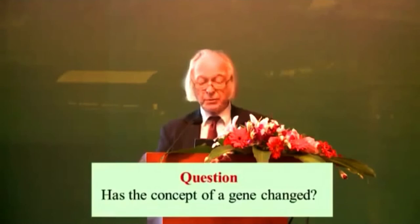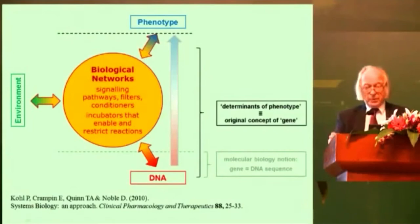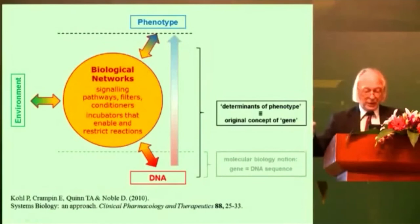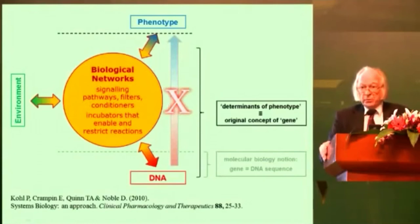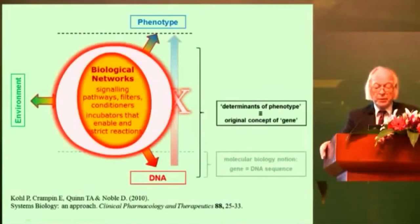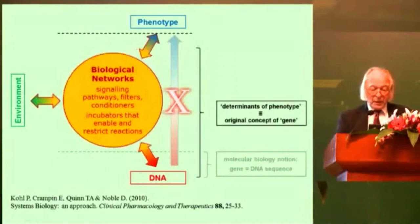I think the reason is that the concept of a gene has changed — fundamentally — during the century since Johansson introduced it in 1909. This diagram shows the nature of the problem. There is the direct arrow from DNA to phenotype, which was the original idea: for each phenotype there was a gene. That is obviously wrong. We know, as physiologists, that large numbers of proteins and other components in cells cooperate in networks — the biological networks, the signaling pathways, the various incubators that enable and restrict reactions — to enable DNA, which is used as a template to make those proteins, to interact with the environment to produce the phenotype.